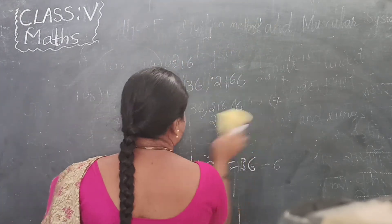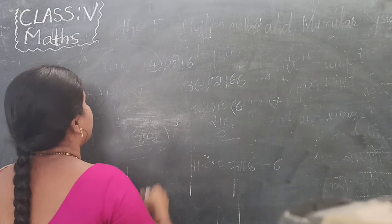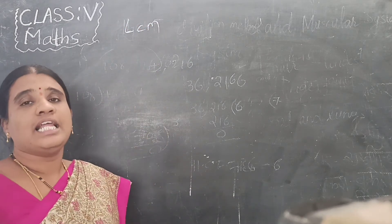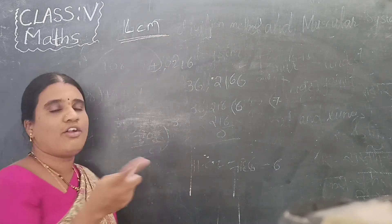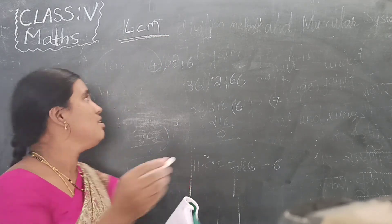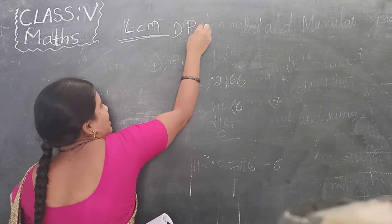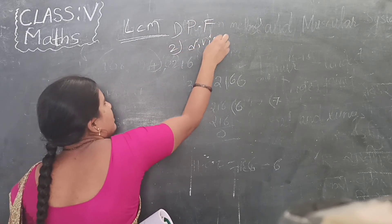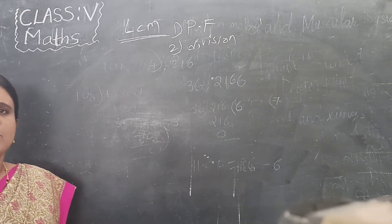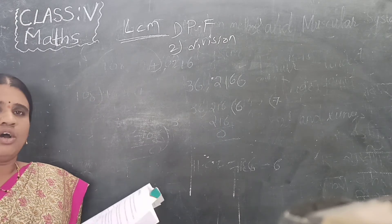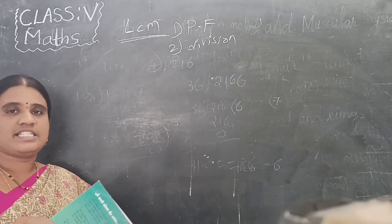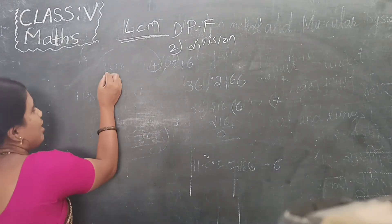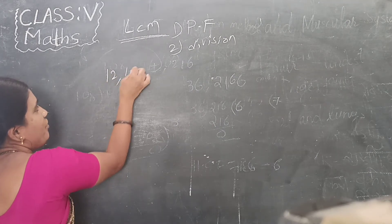Next we have to discuss about the LCM — Least Common Multiple. Here also we have two methods: one is the prime factorization method and the second is the division method. So for the prime factorization method — you know already how to do the LCM. Now I am writing: 12, 15, 18.